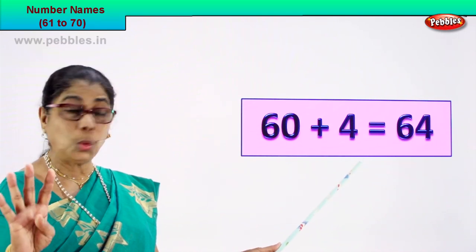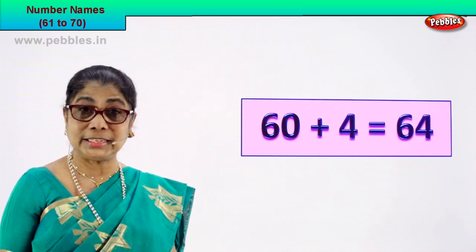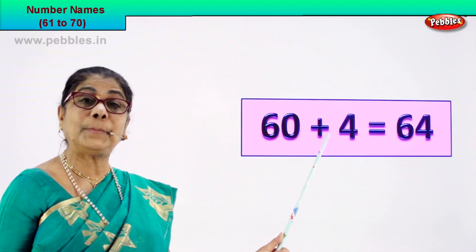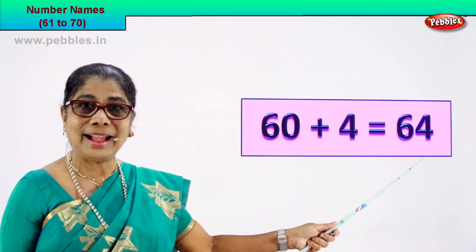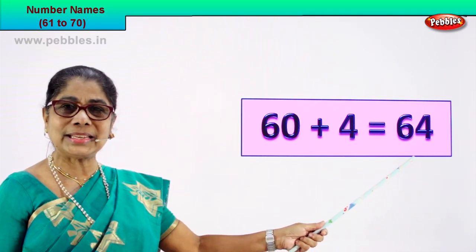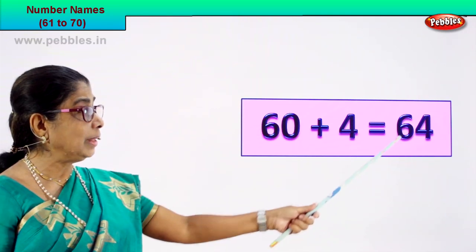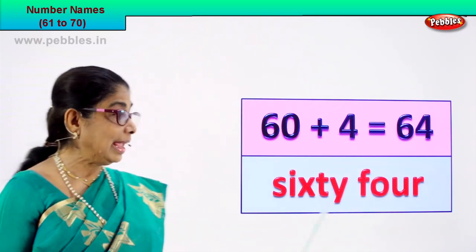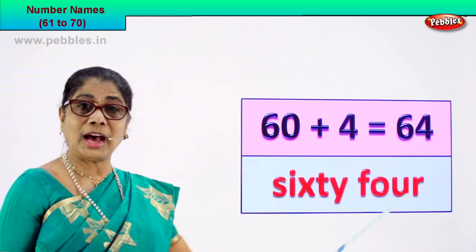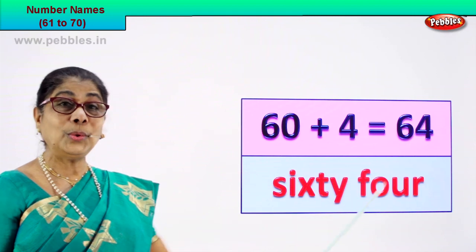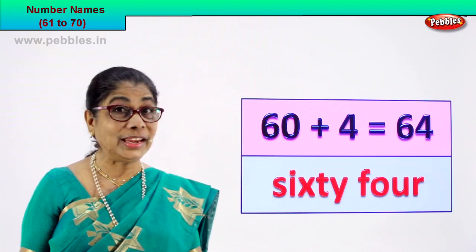60 plus 4 is equal to 64. 6 and 4, 64 is the numeral. How do we write the name? You know the spelling of 60, you know the spelling of 4 — it's very easy. S-I-X-T-Y, 60. F-O-U-R, 4. The numeral is 64. We write its name as sixty-four. Very good!